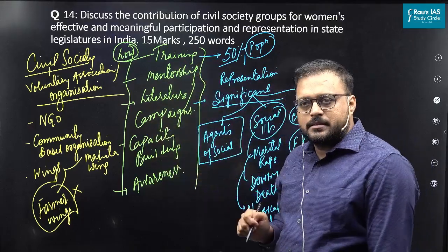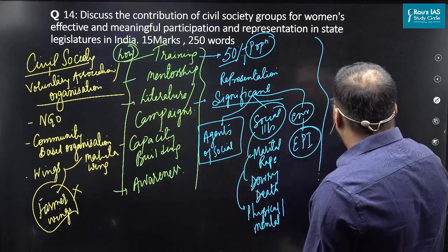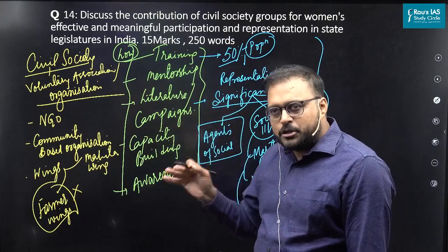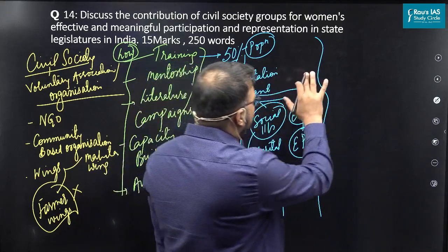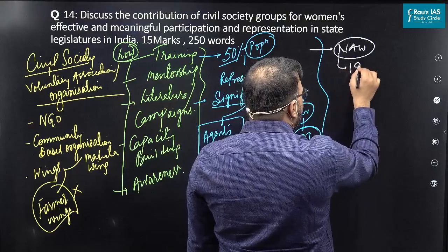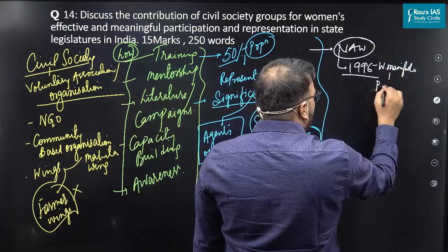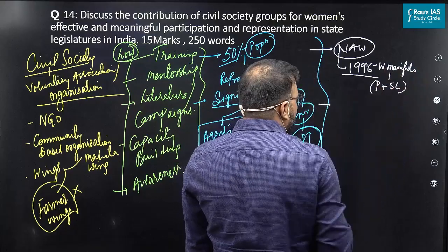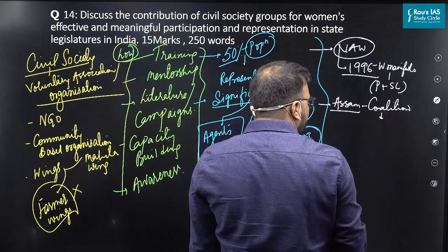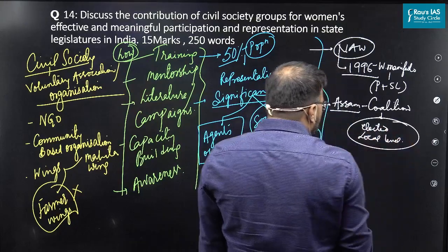These are general arguments you can put in your answer. Now, to be very specific as per the demand of the question — this doesn't mean everything discussed so far is of no use; these must be in your answer. To be particular about the role of civil society, I can mention the National Alliance of Women, which in 1996 released a Women's Manifesto talking about increasing women's representation in parliament and state legislatures. In Assam, a coalition of civil society groups also released a Women's Manifesto talking about increasing women's representation at the local level.